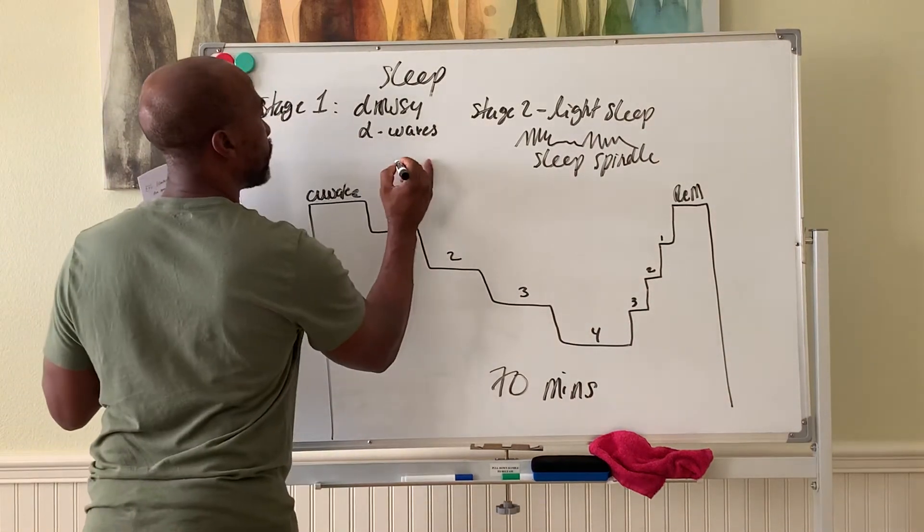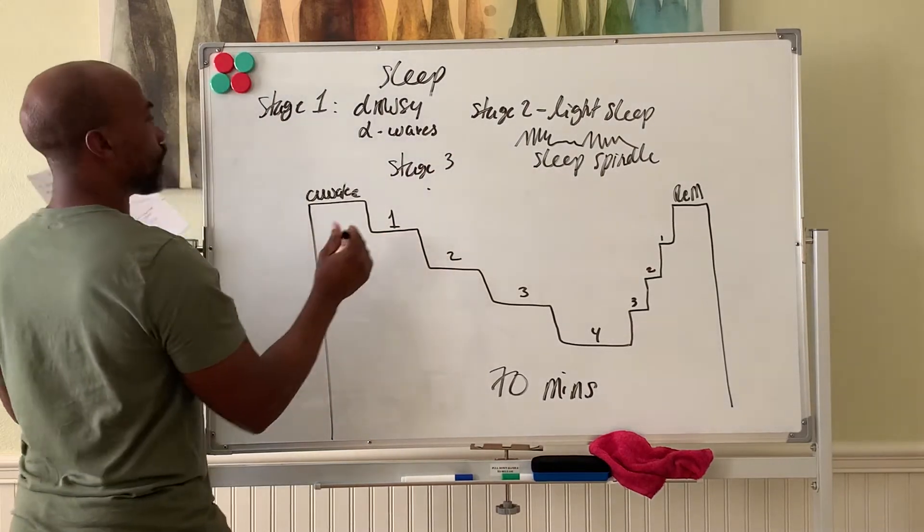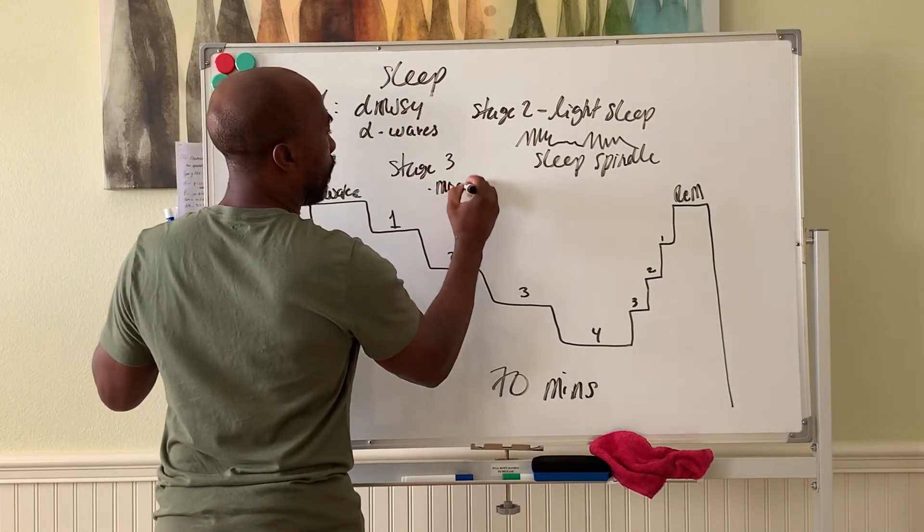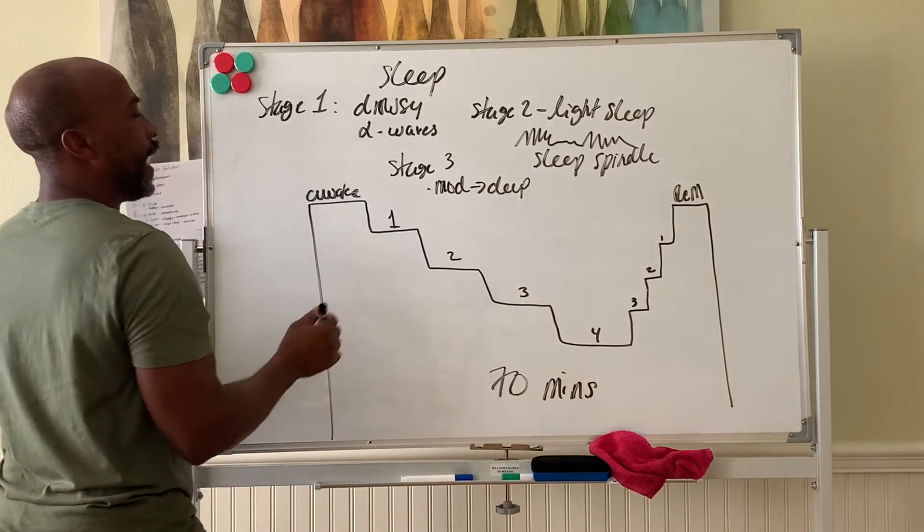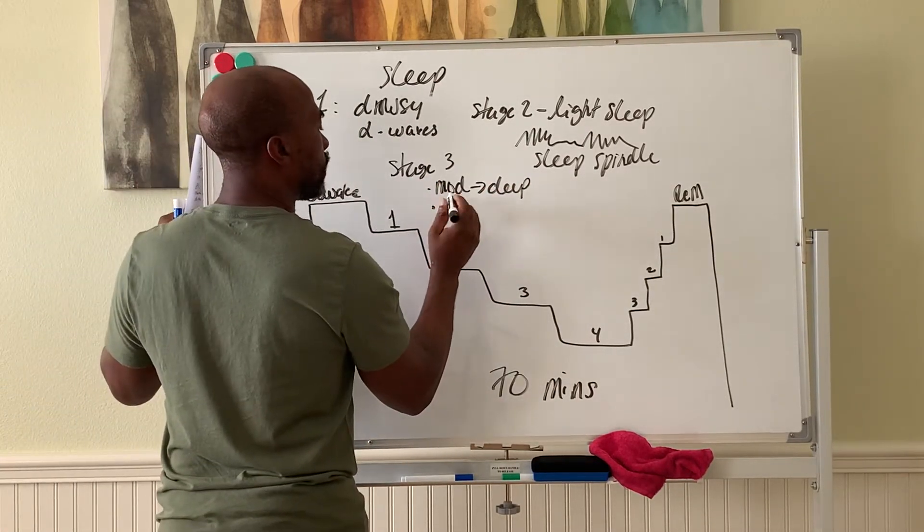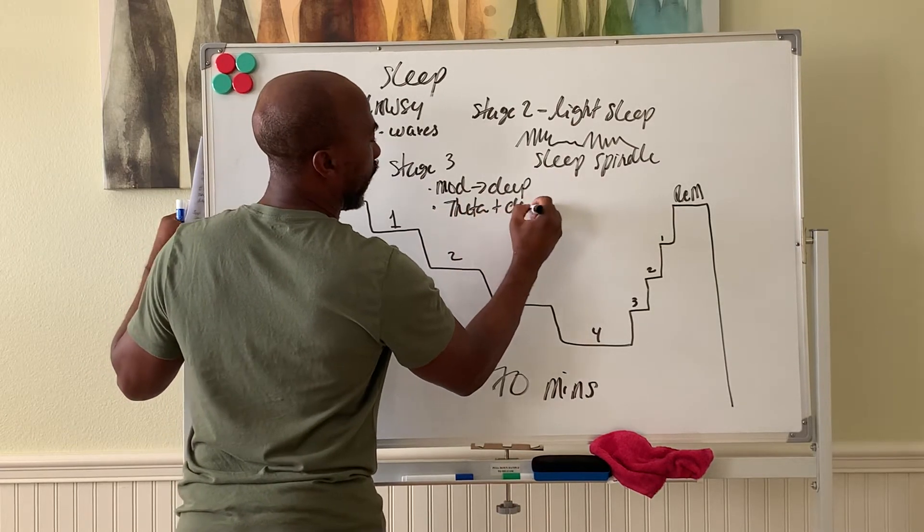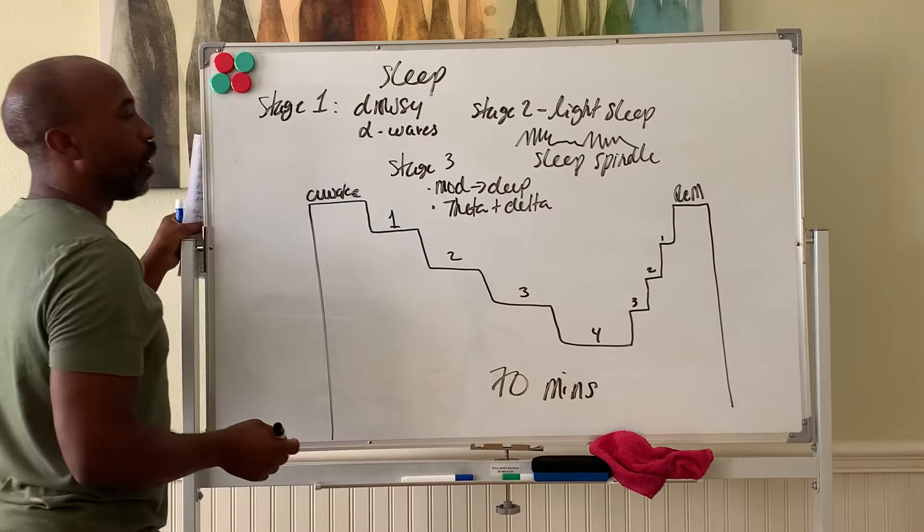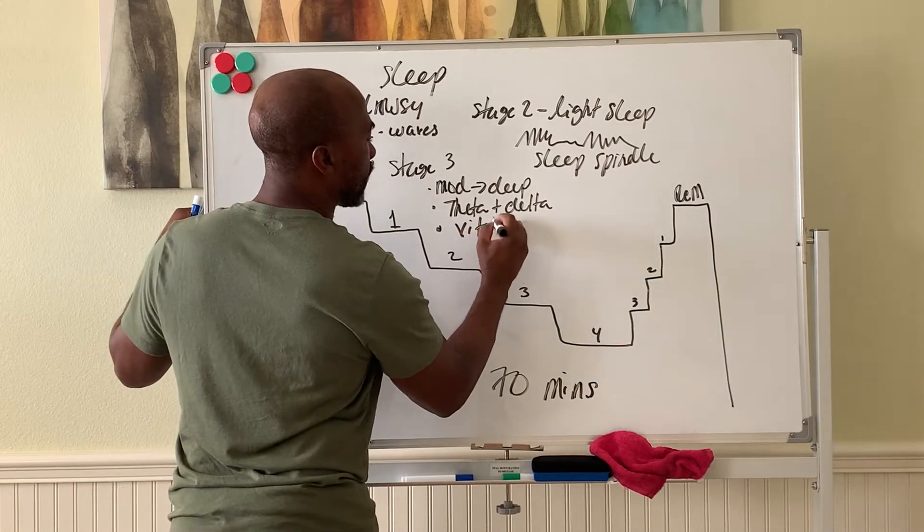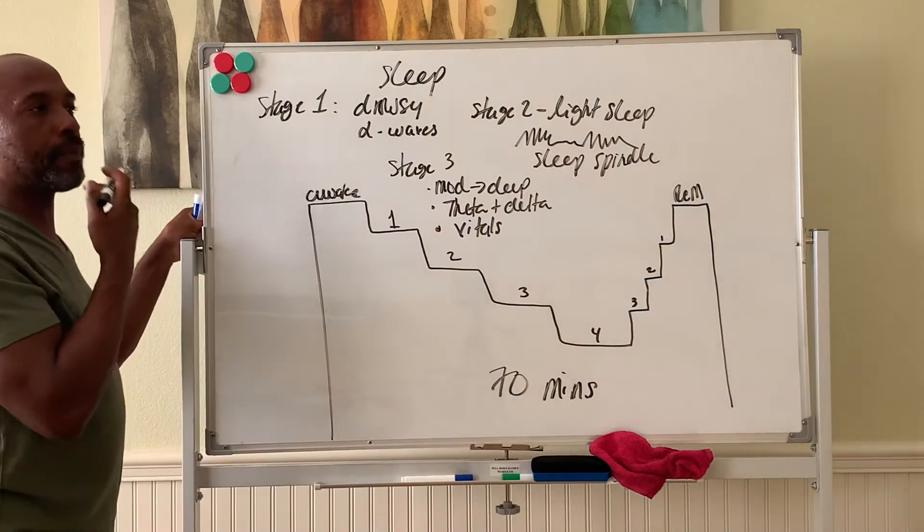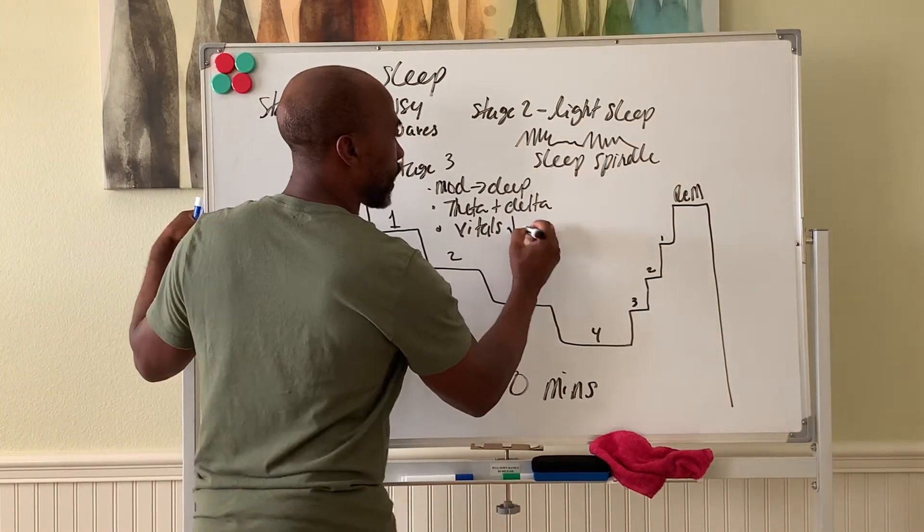Then your stage three sleep. Here we call it moderate to deep sleep. The EEG here typically shows theta and delta waves. Also during stage three sleep, your vitals, things like your heart rate, blood pressure, breathing rate all go down. They drop down.